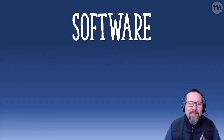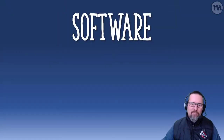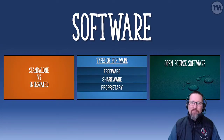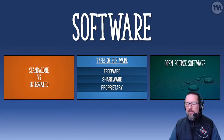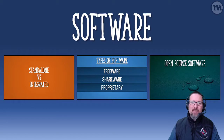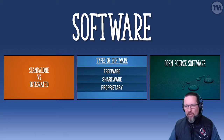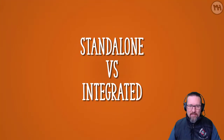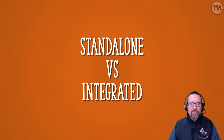We are going to be looking at software today, carrying on from the previous videos. We're going to look at three areas: first, standalone versus integrated software; then the various types of software; and of course FOSS or OSS, which means open source software or free open source software. Let's get started.